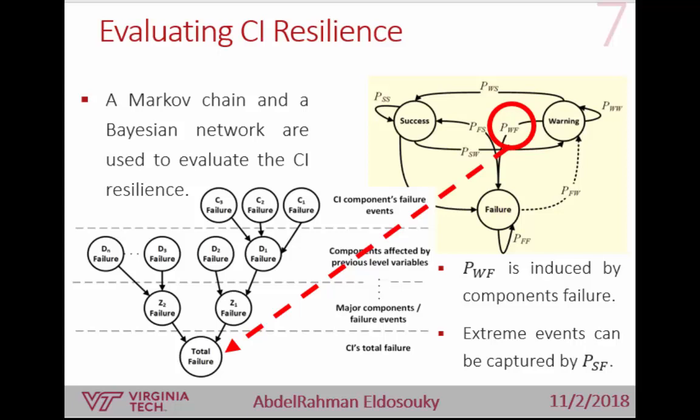Our focus is on how to improve the probability of transitioning from warning to failure states. To do this, we define a Bayesian network that models the internal components of a critical infrastructure in a hierarchical view. The output of this Bayesian network will specify the probability of transitioning from warning to failure.